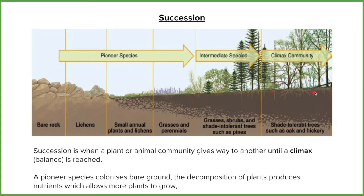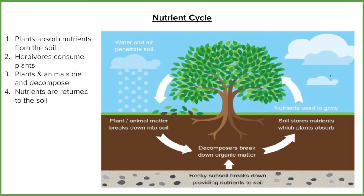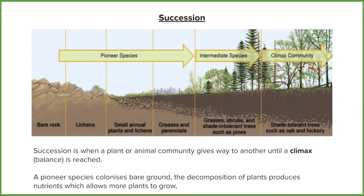This continues until both the biotic and abiotic factors come into balance. That gives us our climax community — a set of vegetation, animals, and soil that is in complete harmony. The second process is the nutrient cycle, which is linked to succession because the nutrient cycle is happening constantly throughout the succession.